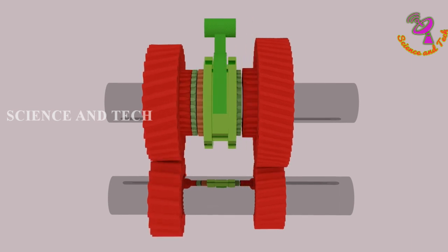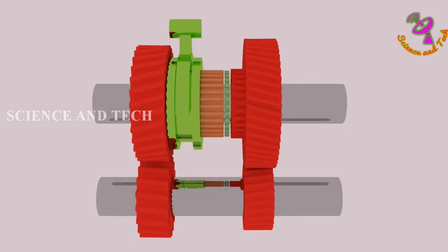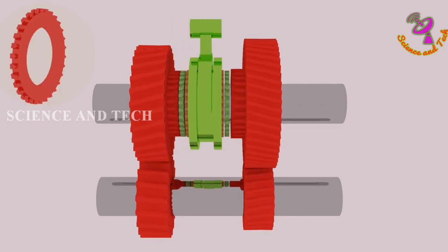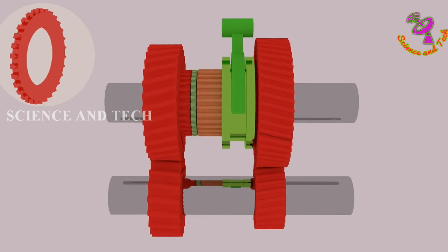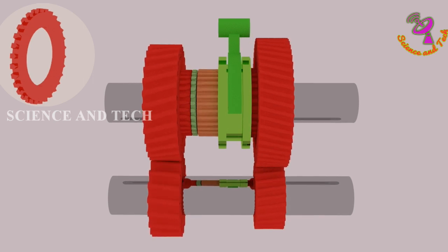During gear change, friction will occur. To reduce friction, synchronizer ring is used. The ring is connected to rotate independently. This will reduce friction and make gear transmission smooth.